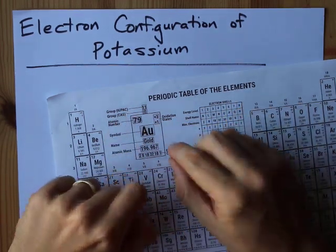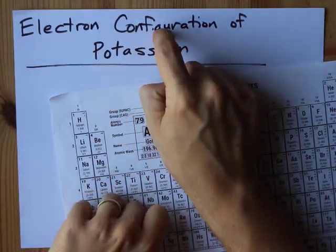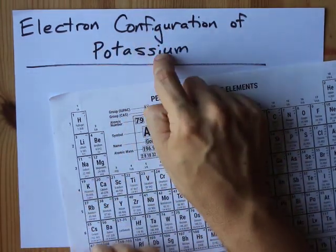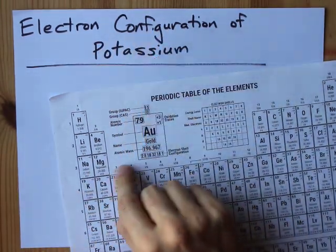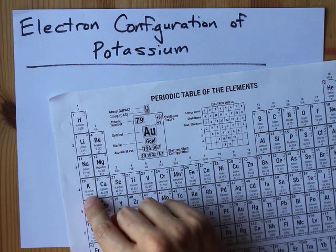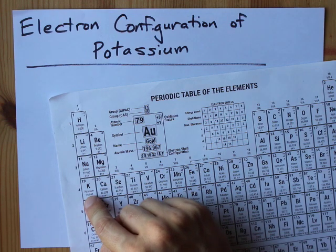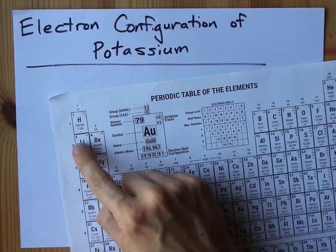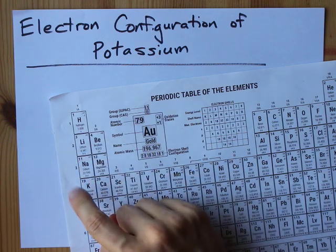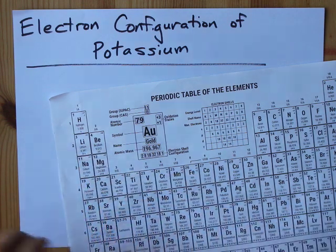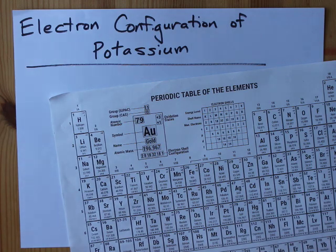What up? It's Chemist Nate with the electron configuration of potassium. Potassium is K on the periodic table. It is the first element in the fourth row of the periodic table.